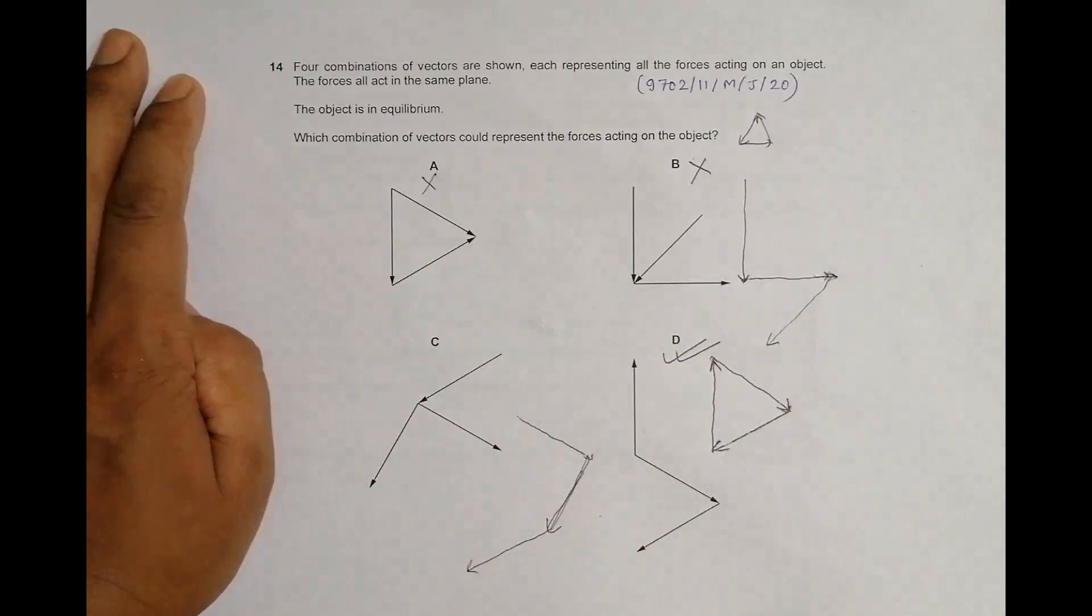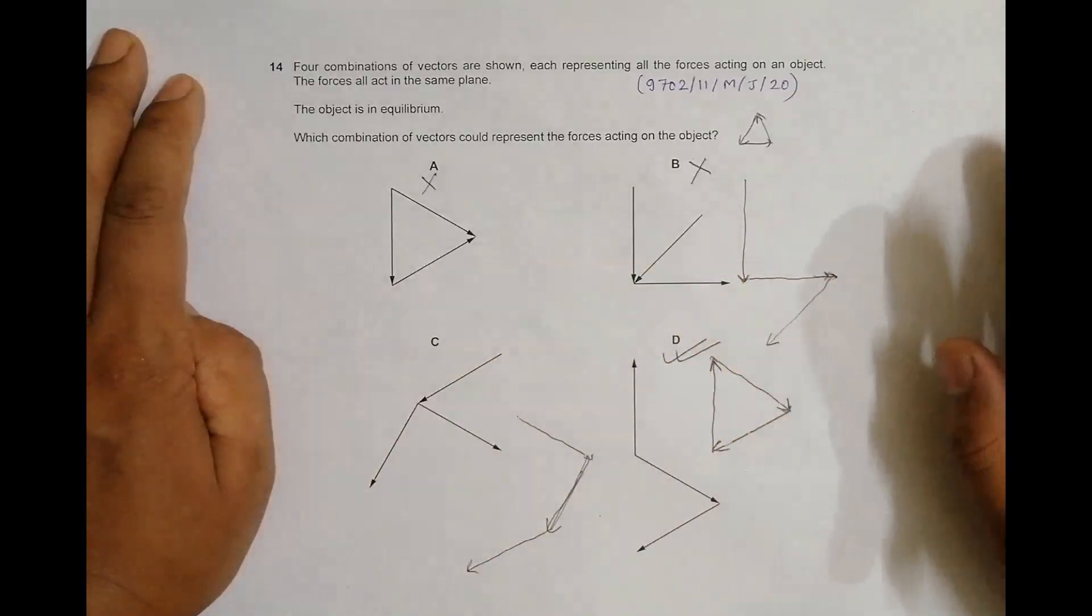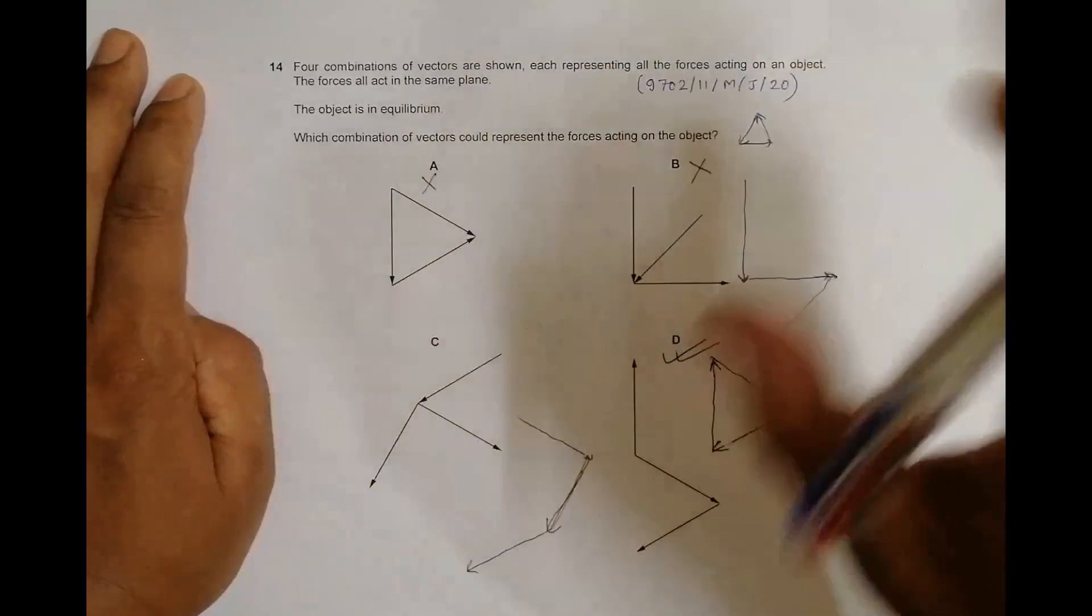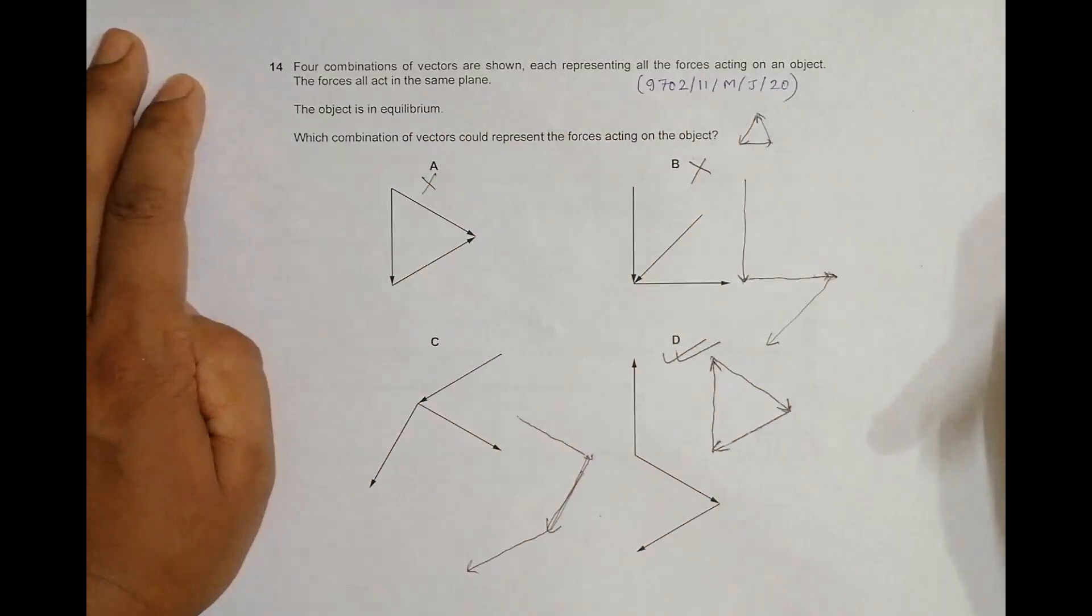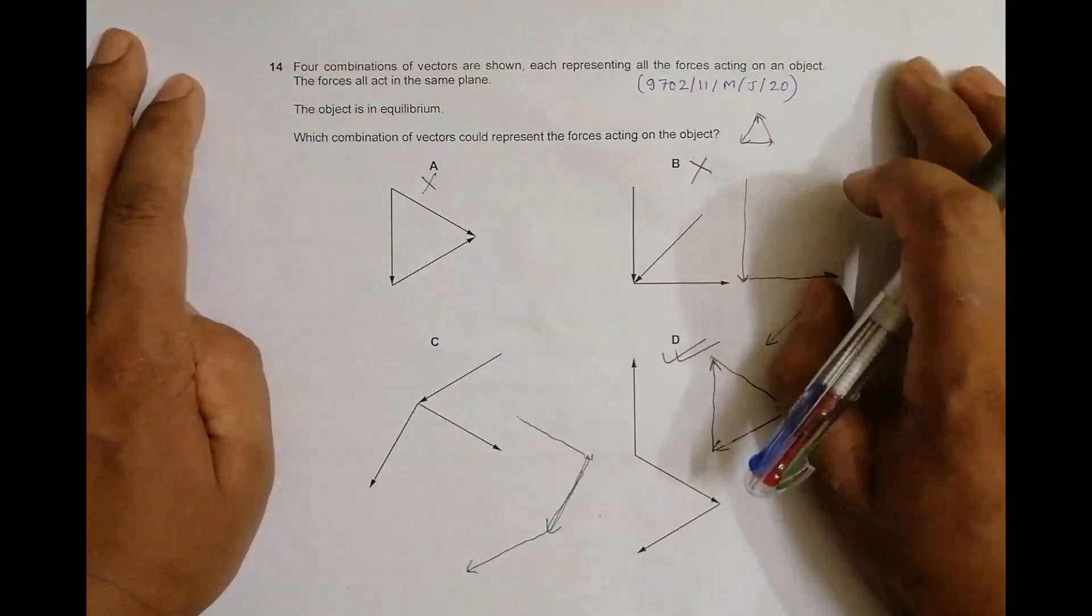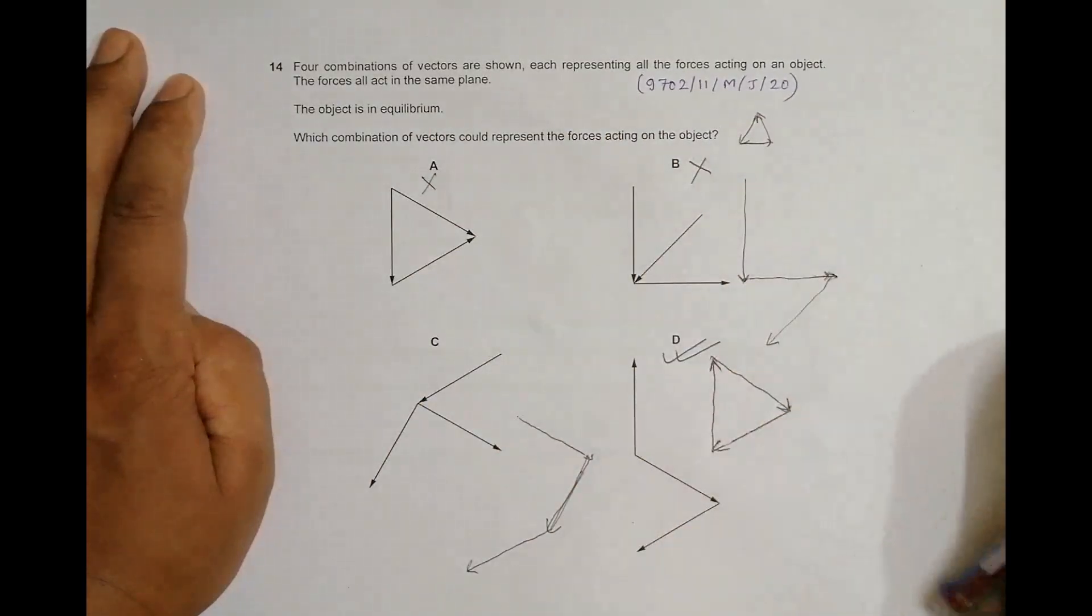So the criteria here is that they should complete a triangle if taken cyclically, if taken in order, one by one. That means the other force should be drawn from the head of the previous force. So if I go on doing it, it comes back to the original point where the original force starts, and that gives us the equilibrium condition. So choice number D is the correct choice.